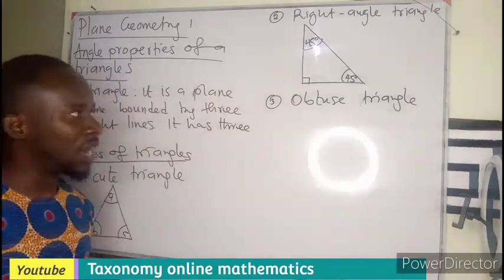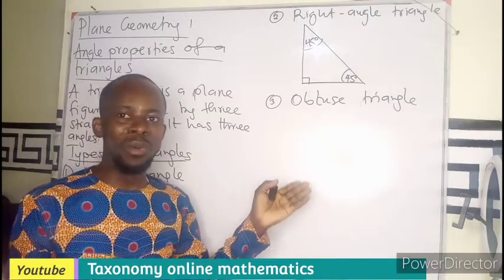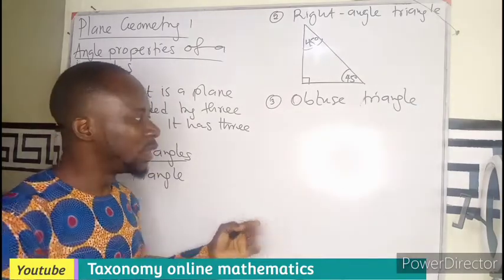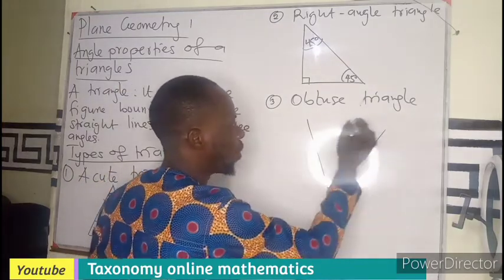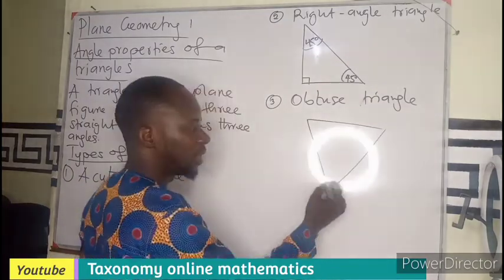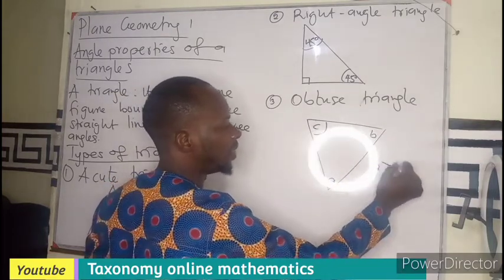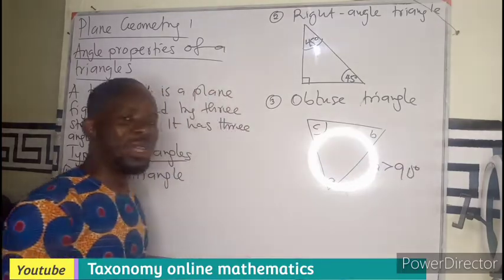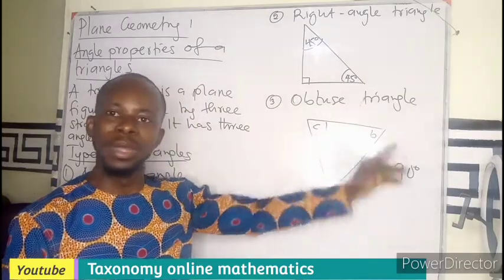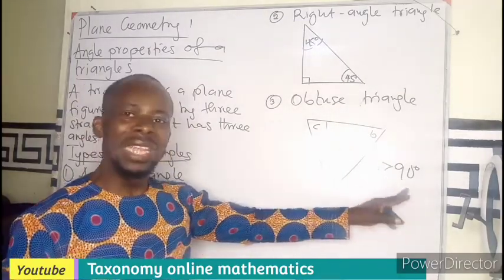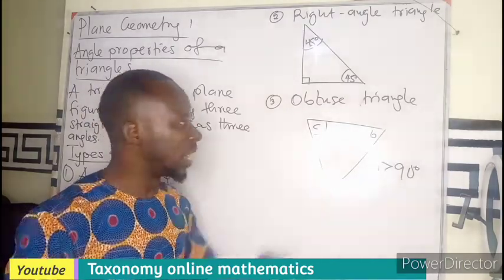We also have an obtuse triangle. Obtuse angles are angles that are bigger than 90 but less than 180. So if any triangle has one of its angles — whether angle A, angle B, or angle C — bigger than 90 degrees, we refer to that as an obtuse triangle.